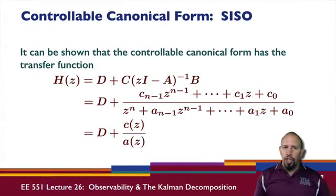Now it can be shown that the controllable canonical form can be written this way: D plus C(zI - A)^(-1)B. This is z, incidentally I'm doing this in discrete time—I could also do it in continuous time.